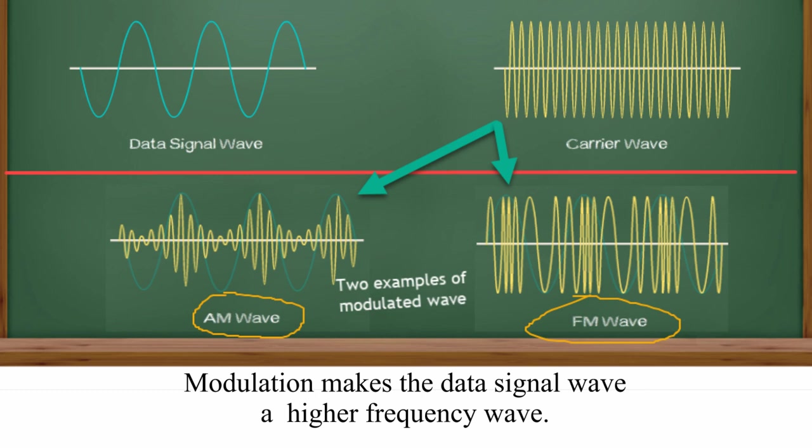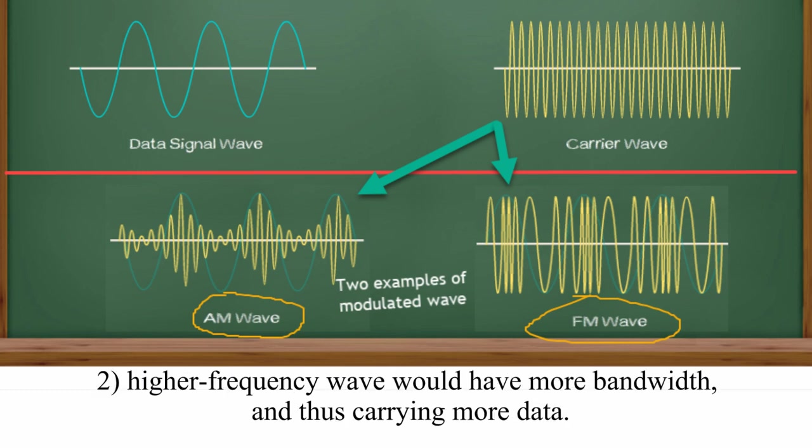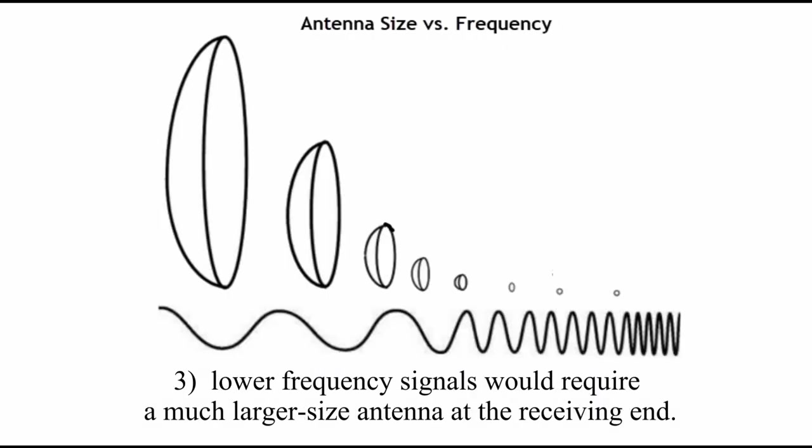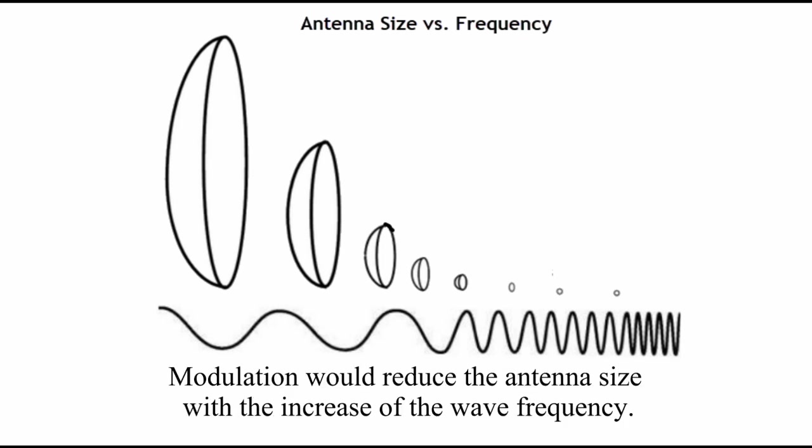Modulation makes the data signal wave a higher frequency wave. 2. Higher frequency wave would have more bandwidth, thus carry more data. 3. Lower frequency signals would require a much larger size antenna at the receiving end. Modulation would reduce the antenna size with the increased wave frequency.